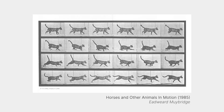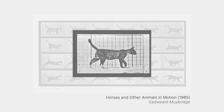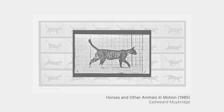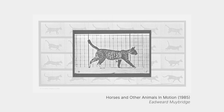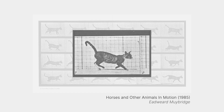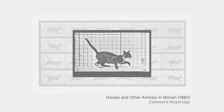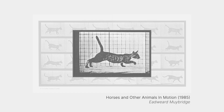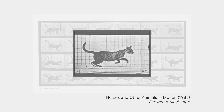Movies, animation and video games aren't actually moving. What you see on screen is really a series of images being shown one after another. When this happens really quickly, we stop seeing the individual images and start perceiving motion.